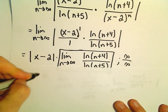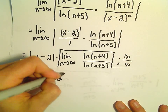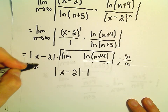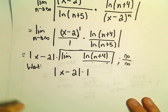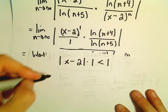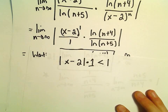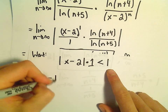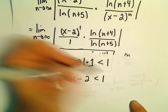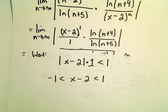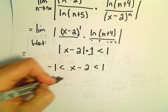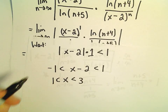So that tells us that we're going to be left with the absolute value of x minus 2 times 1. And to converge, the ratio test says we want this to be less than 1. That says that negative 1 would be less than x minus 2, which would be less than positive 1. And if we add 2 everywhere, we'll get positive 1 less than x less than 3.